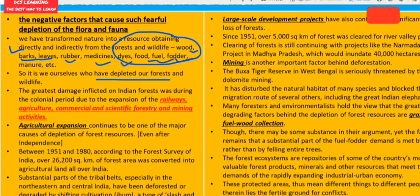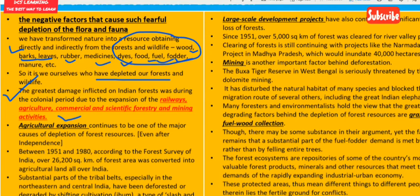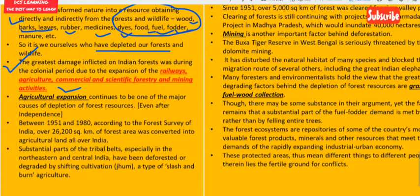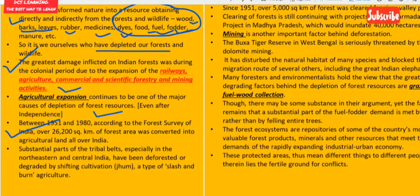The greatest damage inflicted on Indian forests was during the colonial period, and destruction has continued even after independence. Between 1951 and 1980, according to the Forest Survey of India, over 26,200 km² of forest area was converted into agricultural land. A substantial part of tribal belt, especially in northeastern and central India, has been deforested or degraded by shifting cultivation — a type of slash and burn agriculture.